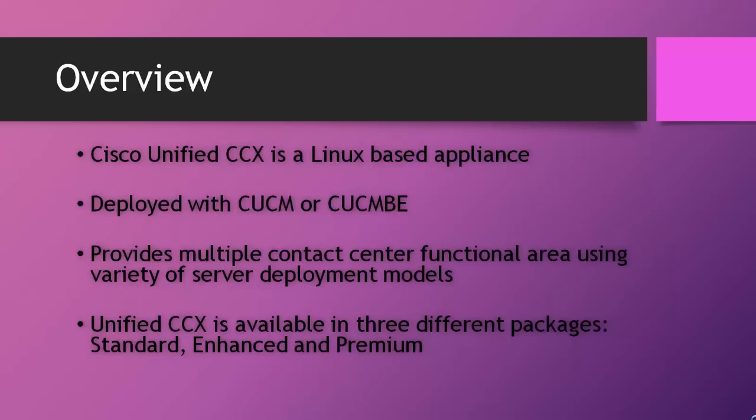Cisco Unified CCX is a Linux based appliance. The appliance model is secure, resilient and robust — less complex and provides for faster installs, easier upgrades and less frequent patching. Till version 7.X, Unified CCX was installed on a Windows based appliance. From version 8.0, Cisco migrated the platform to a Linux based appliance.